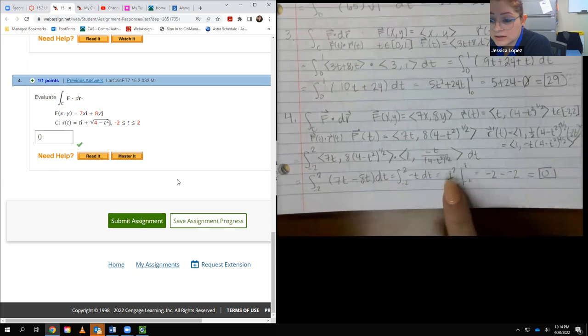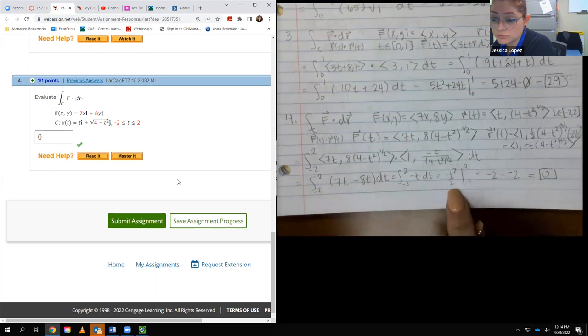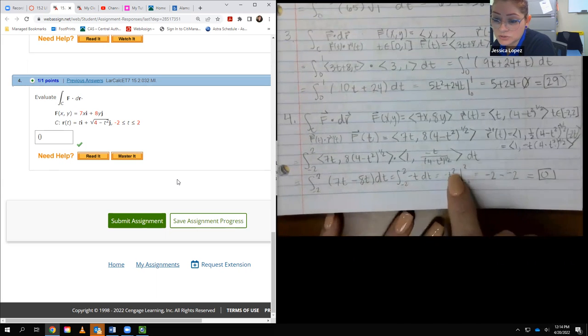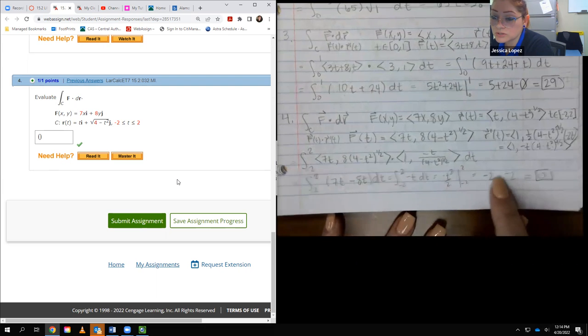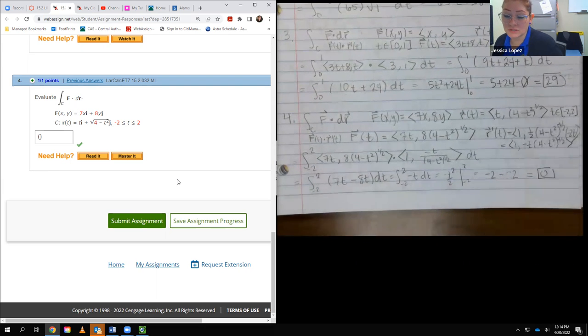And when I integrated that, I got negative t squared over 2. So when I plug in 2, I end up with negative 2, minus when I plug in negative 2, I end up with a negative 2. So these double negatives cancel, and I do end up with 0 in the end. And so again, there's only four problems in this section, so that is the end of this section.